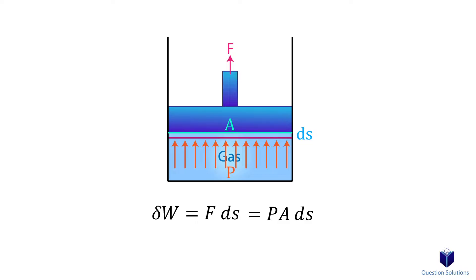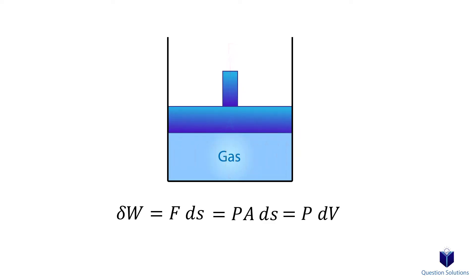On a side note, the pressure of the gas is actually the pressure at the inner surface of the piston. Now going one step further, instead of saying the cross sectional area times ds, we can actually just use differential volume. So volume change dV is positive during an expansion process, so when the volume increases, and negative in a compression process, when the volume decreases.